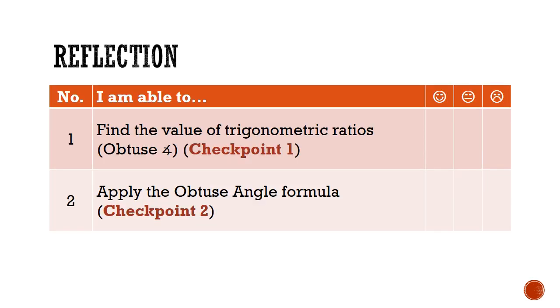Finally, let's go back to where we first started. Have a look at the success criteria that we set out at the start of the lesson. Are you now able to find the values of trigonometric ratios for obtuse angles using the obtuse angle formulas? And are you able to apply the obtuse angle formulas?